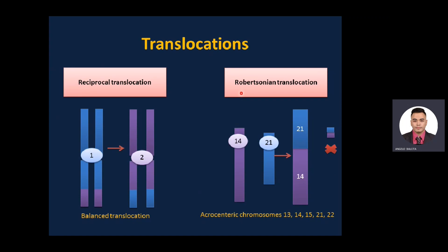Translocation is the exchange between chromosomes. We have reciprocal translocation and Robertsonian translocation. In reciprocal translocation, a piece of chromosome 1 goes to chromosome 2 and vice versa. If they are equal, this is a balanced translocation — many people live healthily with this. If there is too much from one side, this is an unbalanced translocation, which can be associated with health problems.